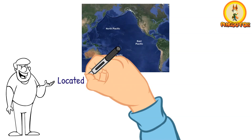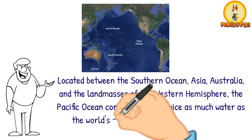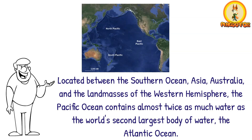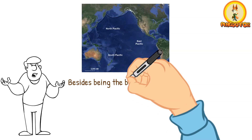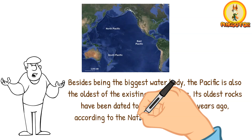Located between the Southern Ocean, Asia, Australia, and the land masses of the Western Hemisphere, the Pacific Ocean contains almost twice as much water as the world's second largest body of water, the Atlantic Ocean. Besides being the biggest water body, the Pacific is also the oldest of the existing ocean basins. Its oldest rocks have been dated to about 200 million years ago, according to the National Oceanic and Atmospheric Administration's National Ocean Service.